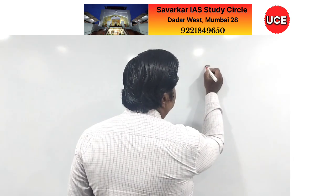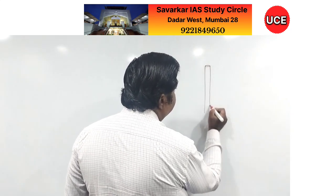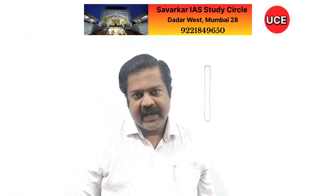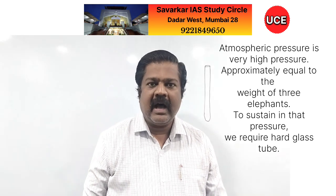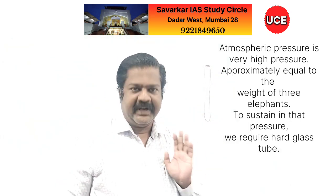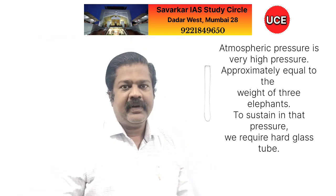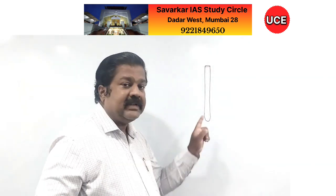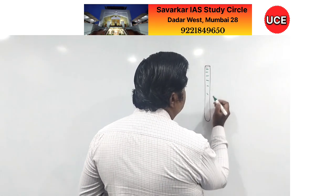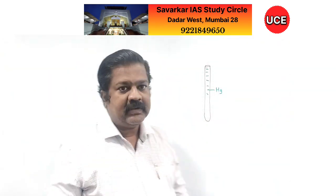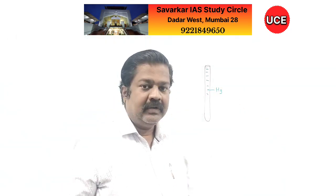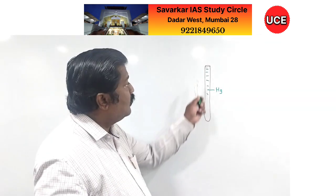First, you have to take a tube which is a hard glass tube. I will explain why it is hard glass, but right now we have to consider this is a hard glass tube. This hard glass tube has a length of 1 meter — you are aware 1 meter means 100 centimeters. This tube is filled completely by mercury. The Latin name for mercury is hydrargyrum, therefore its symbol is Hg. We have to fill mercury till the top.